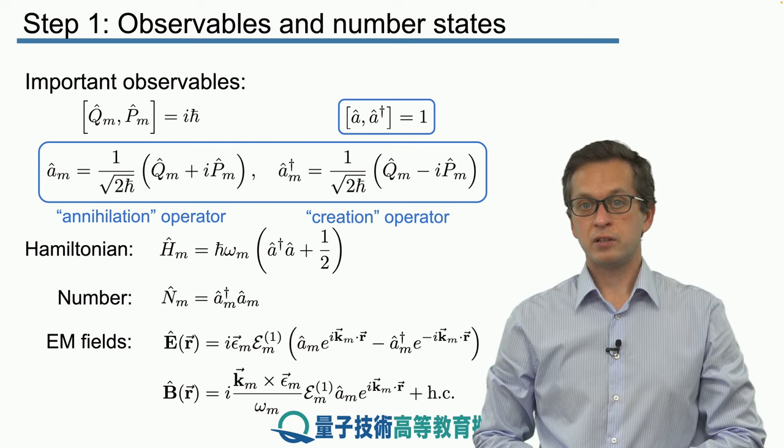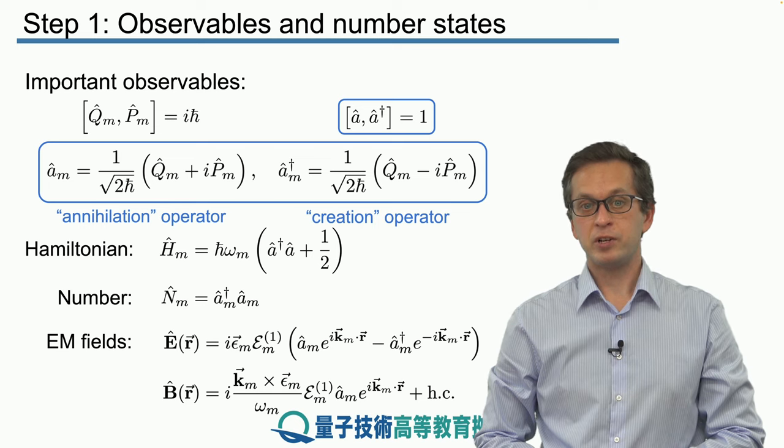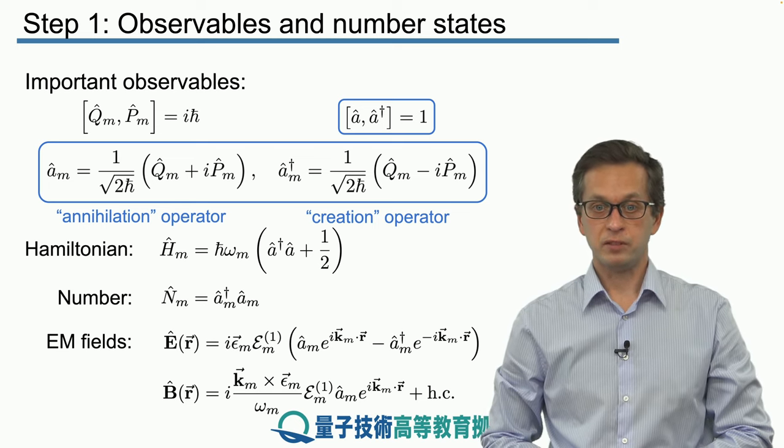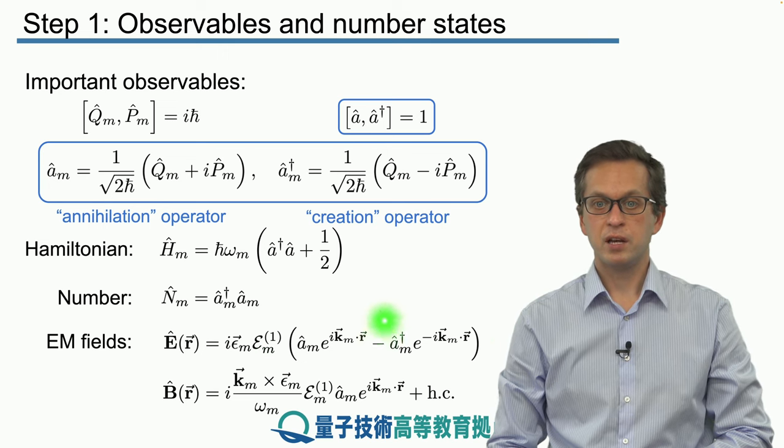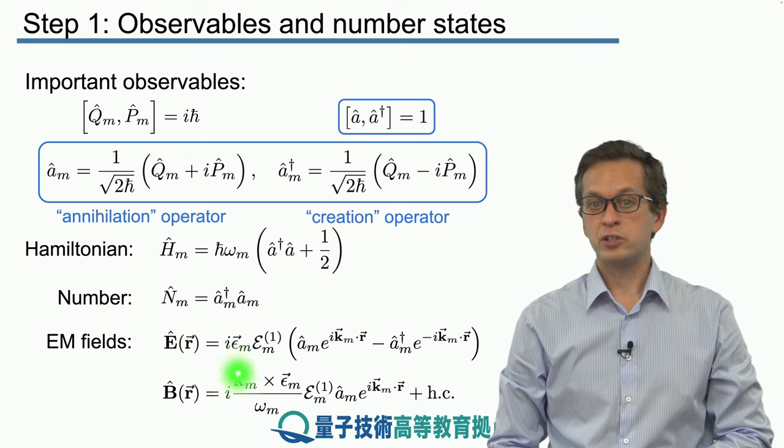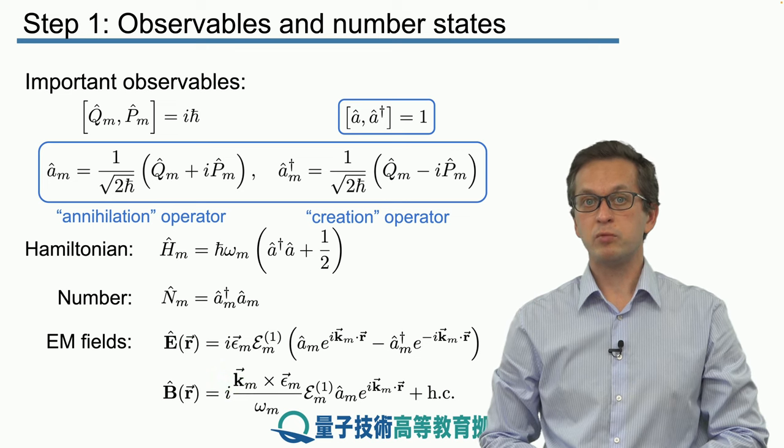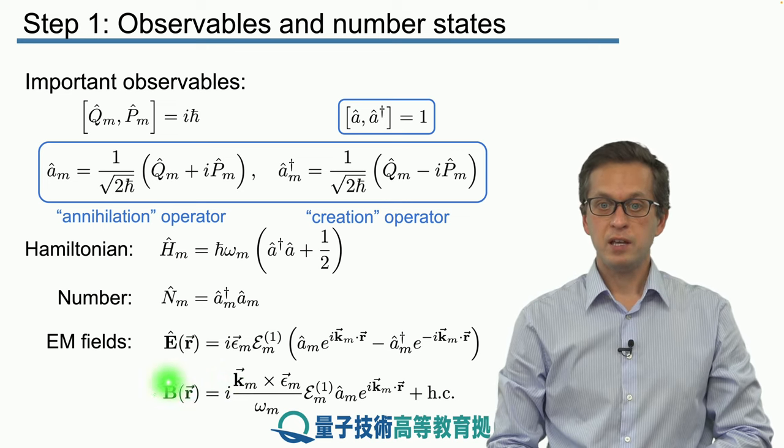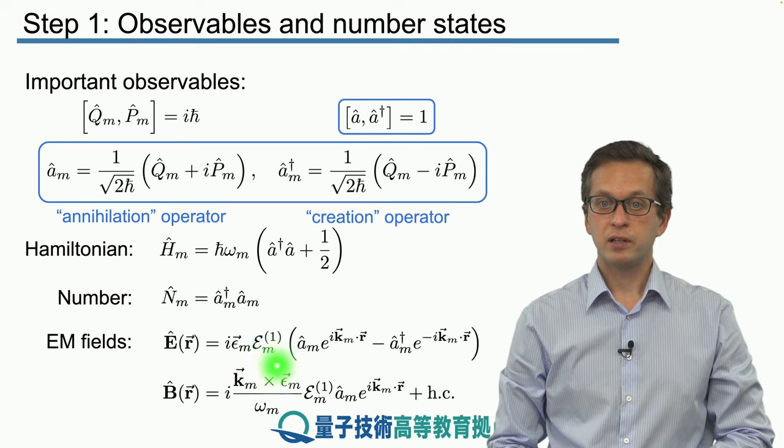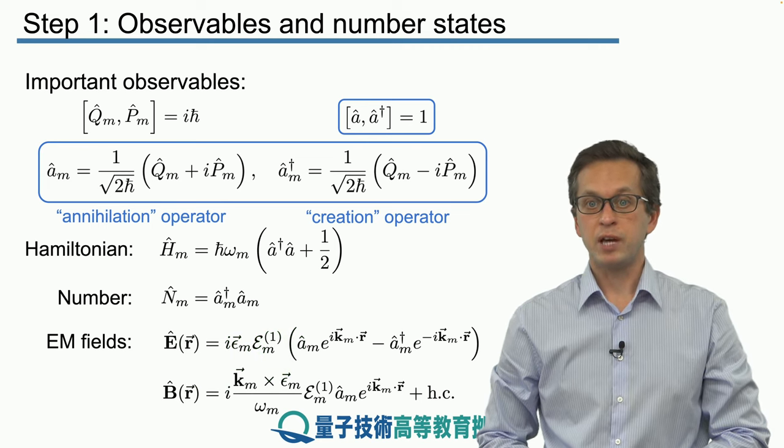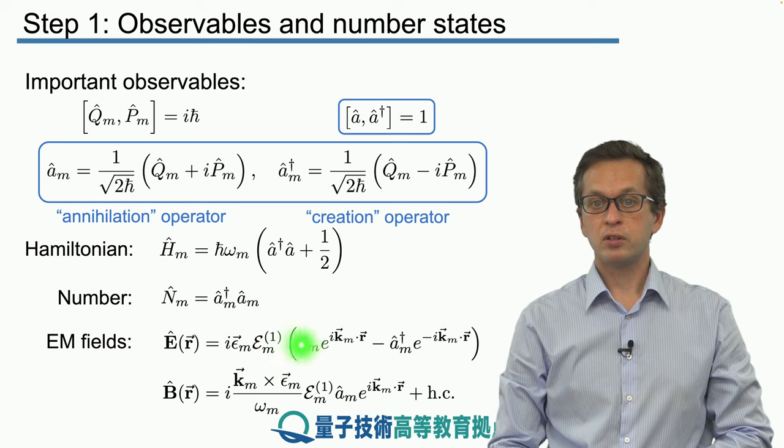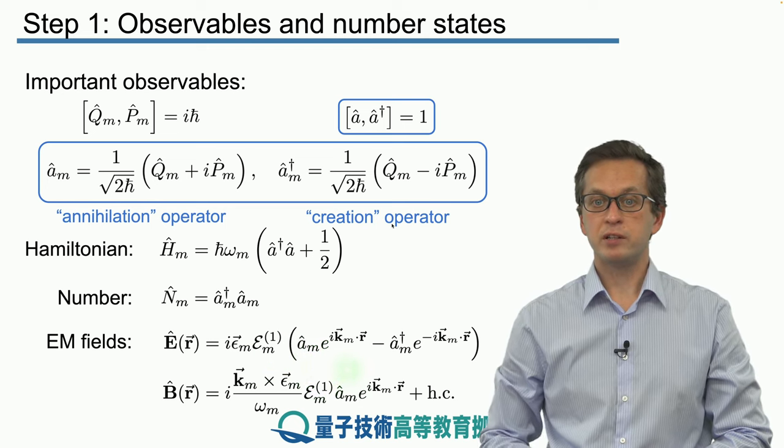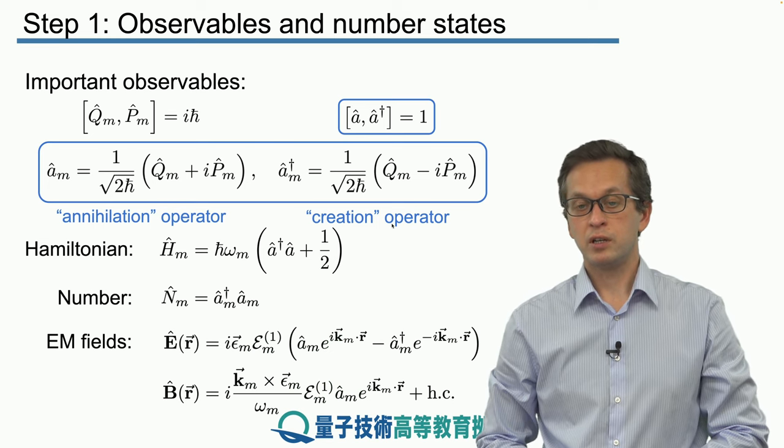Using the creation and annihilation operators, we can write the electric and magnetic fields as follows. This i is a convention used in many textbooks. ε is the polarization vector, E₁ is the one-photon amplitude, and we have the combination of creation and annihilation operators with their corresponding exponentials.